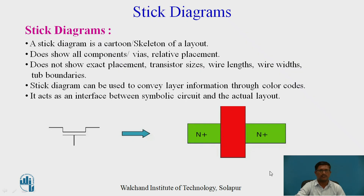A stick diagram is a cartoon or skeleton of a layout. It shows all components or wires and the relative placement of different NMOS, PMOS, polysilicon, and metals. It does not show the exact placement, does not reflect transistor sizes, should not include any wire lengths, and should not show any wire width or tub boundaries. The stick diagram conveys layer information through color codes.